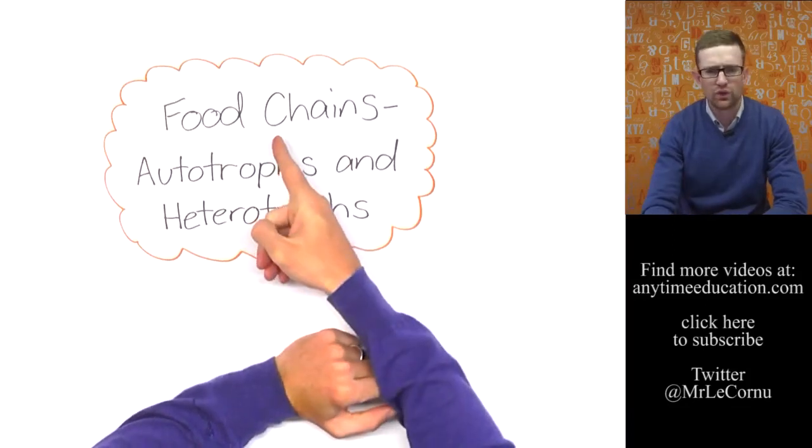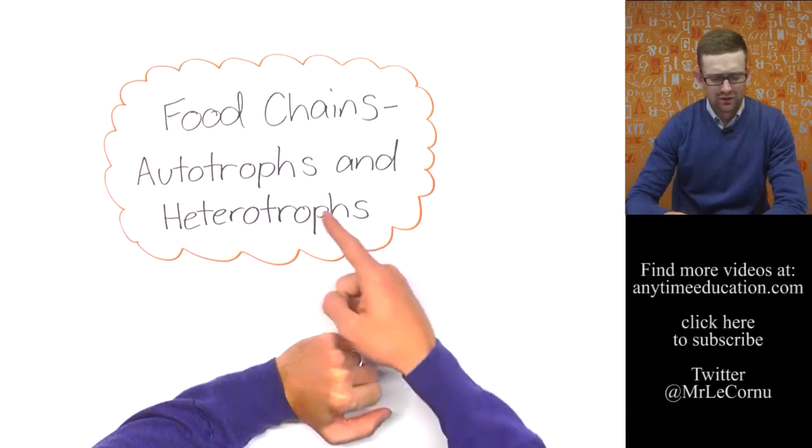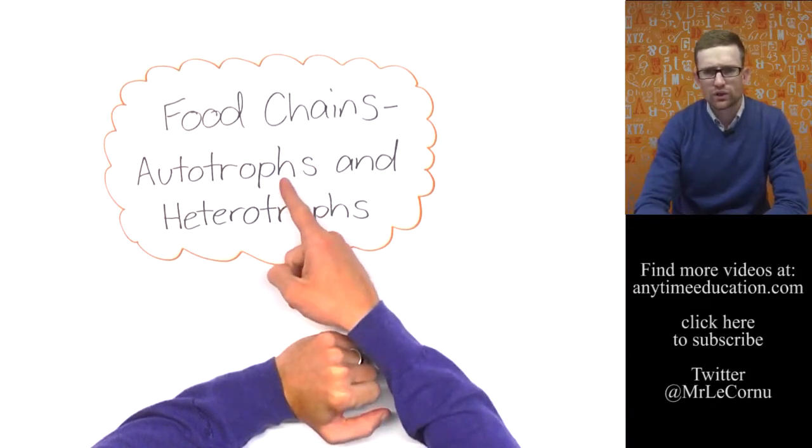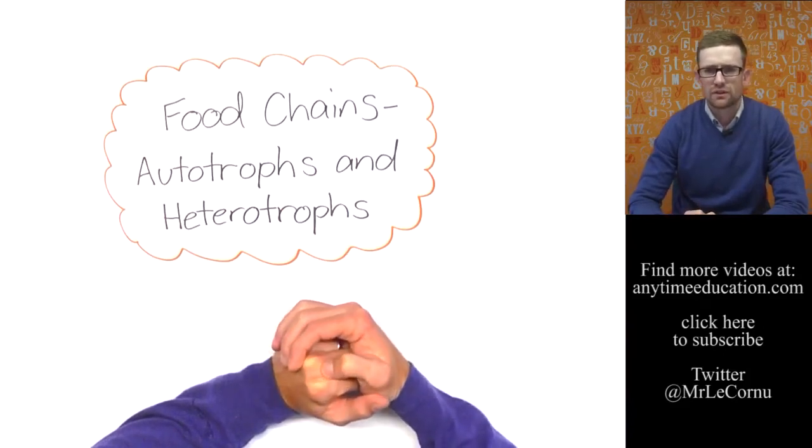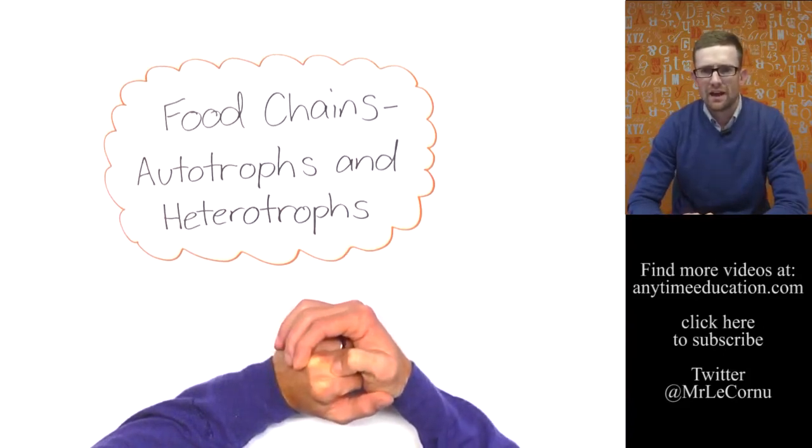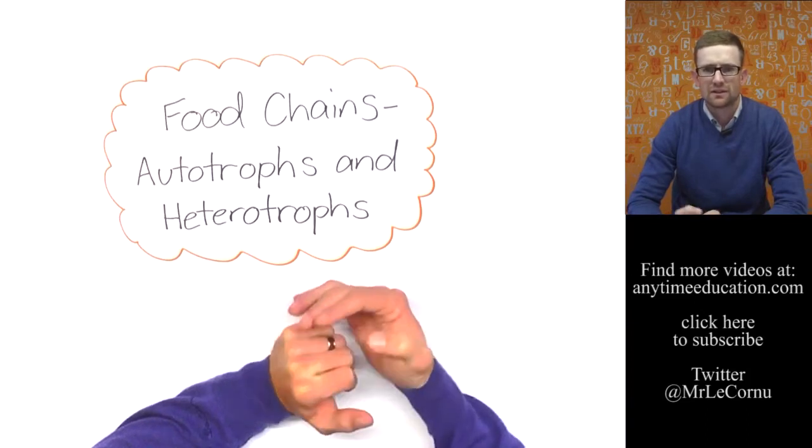In this video I'm going to look at food chains and two classifications that we can use: a category called autotrophs for living things and a category called heterotrophs. What they are and how we can classify living things into those two categories. Let's get started.